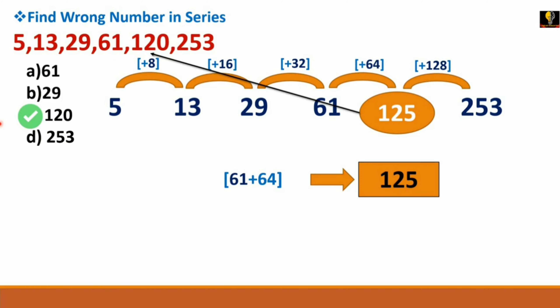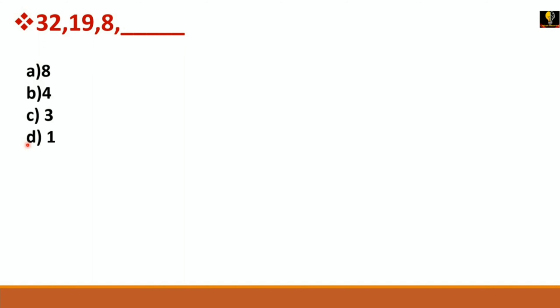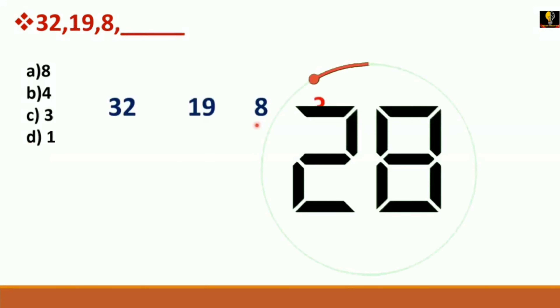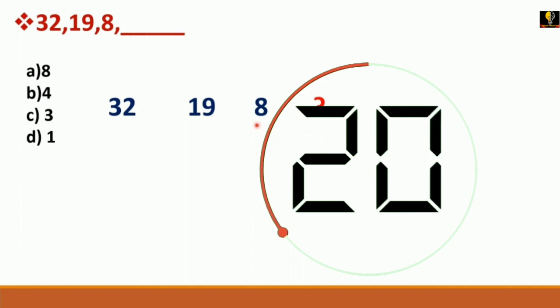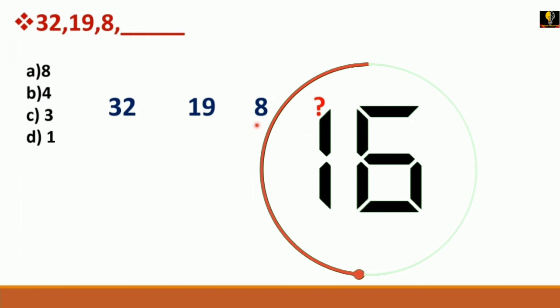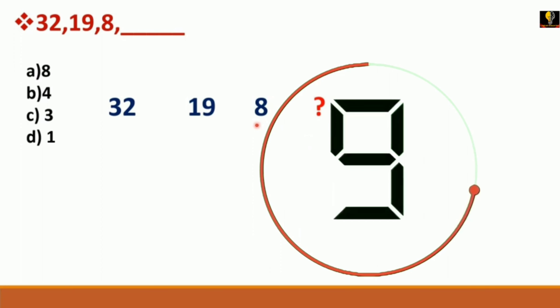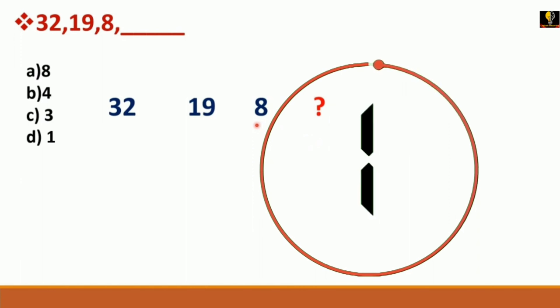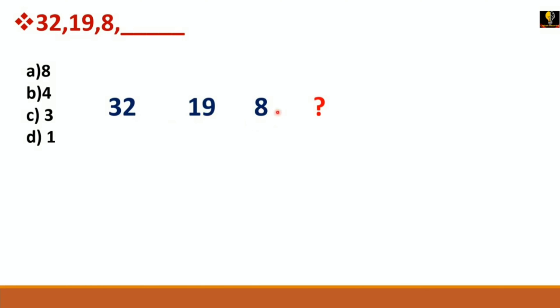The next question: the series is 32, 19, 8 — find the next number. Options are A, B, C, and D. Your time starts now. The series 32, 19, 8 is in a decremental form.